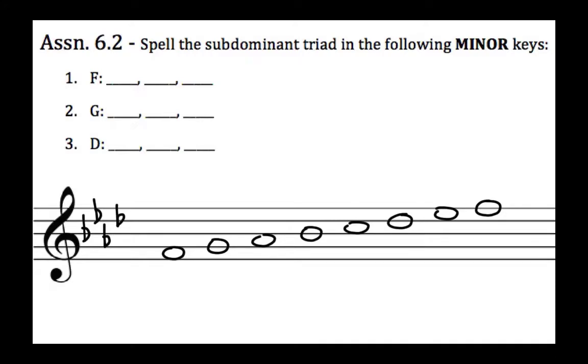In the blanks, we would like you to put the minor subdominant. We're going to go to the fourth scale degree and spell it B♭, D♭, F. Notice because of this D♭, this note here is not a D, it is a D♭. So the correct answer then would be B♭, D♭, and F.